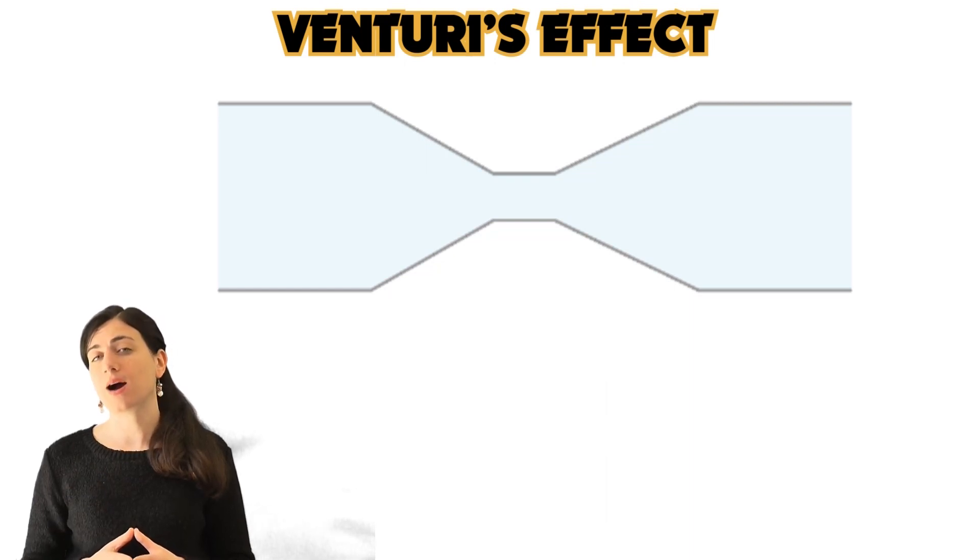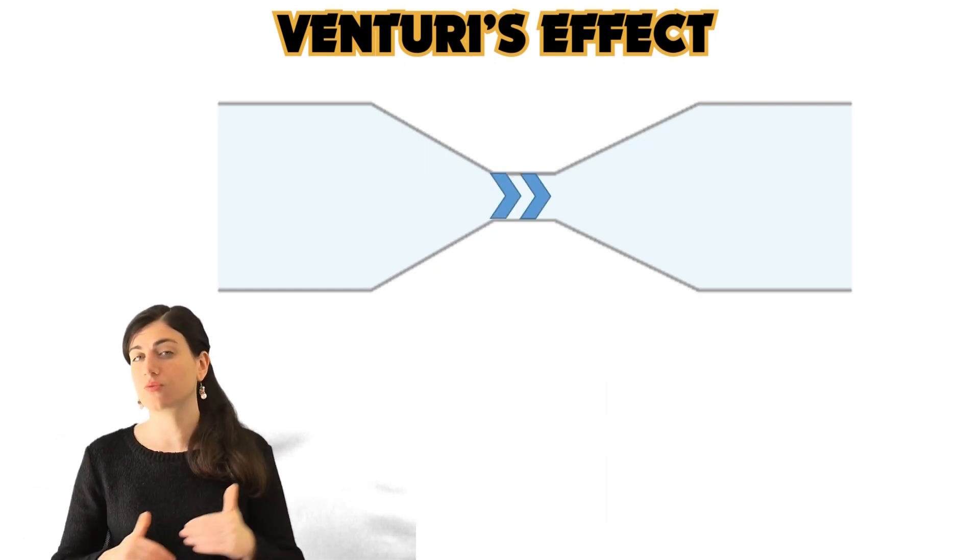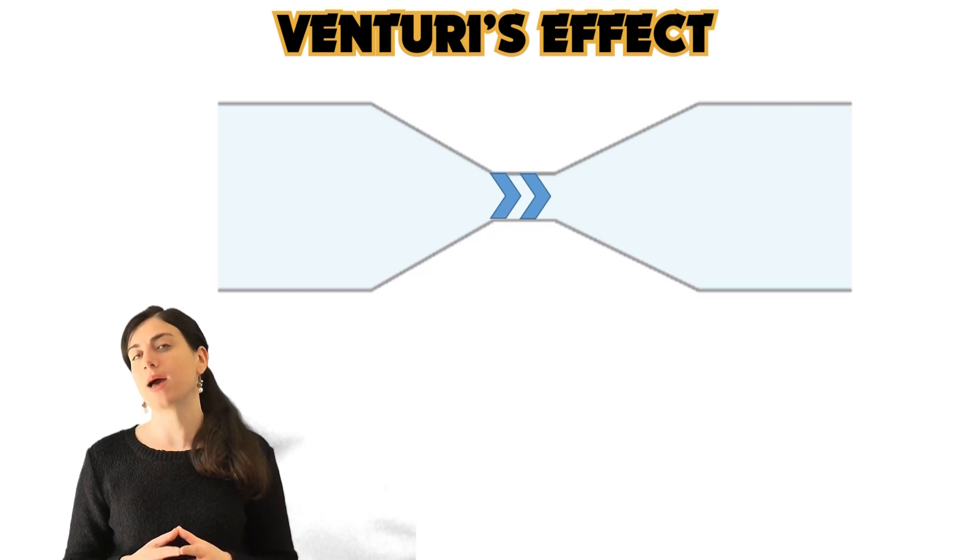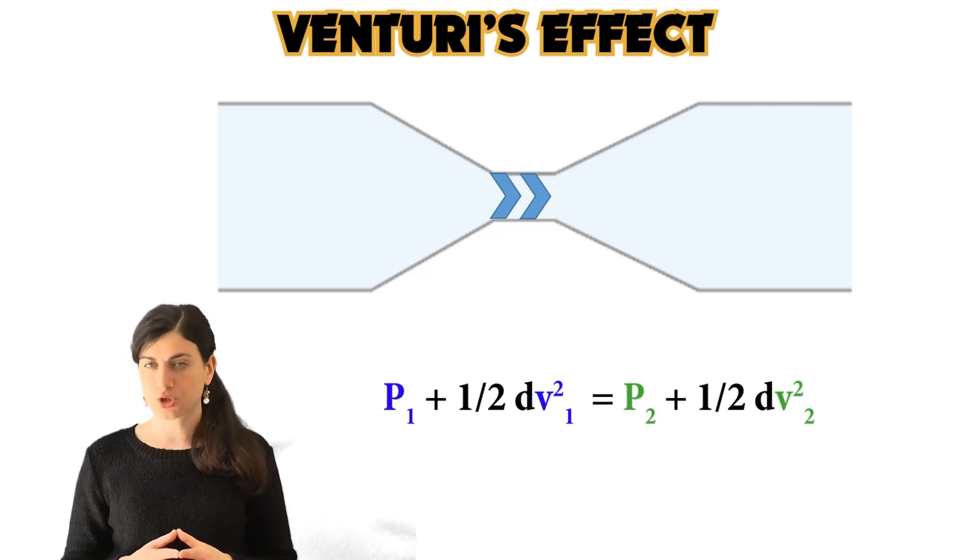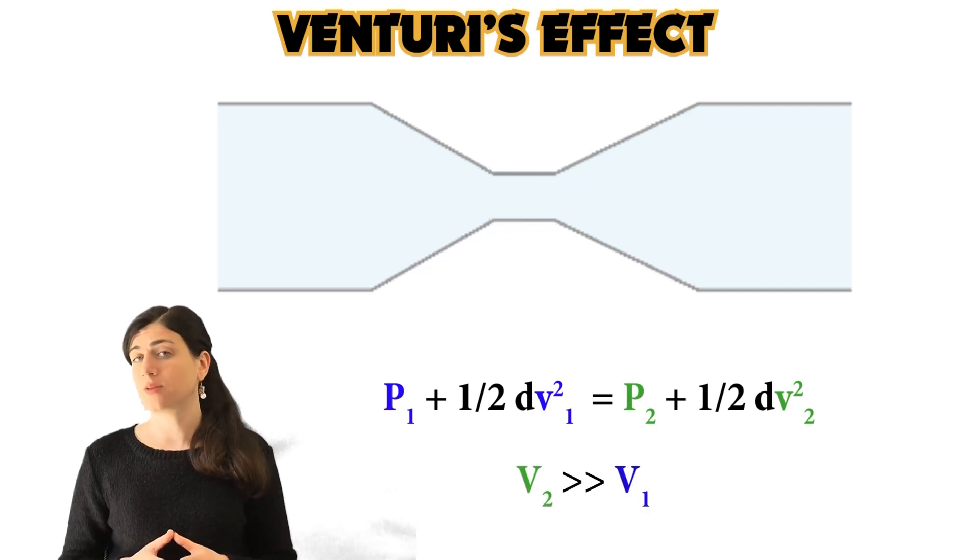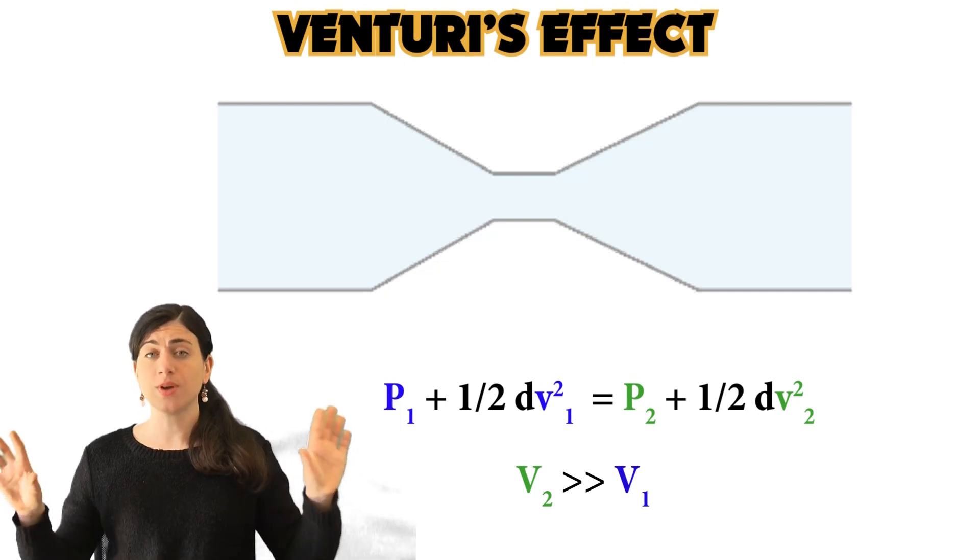So in the narrowing, we will have a higher speed of the fluid. But now, let's go back to our Venturi equation. So now we get that V2 is bigger than V1. But as you can see from the Venturi equation, the two terms of the equation should be the same.